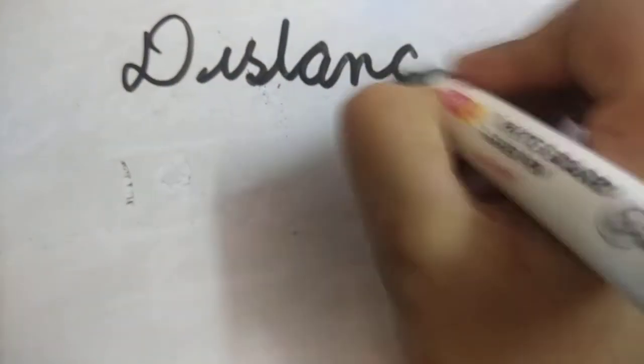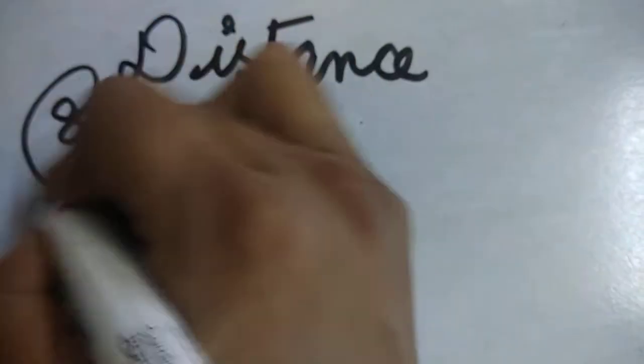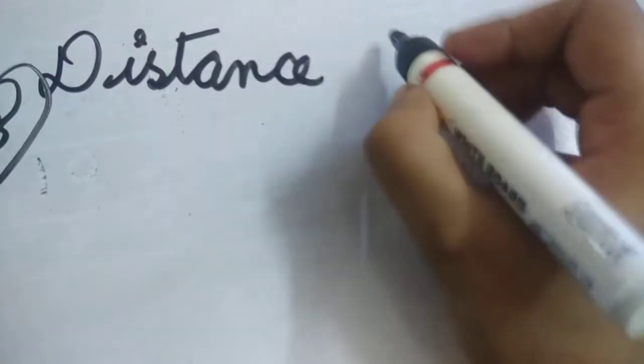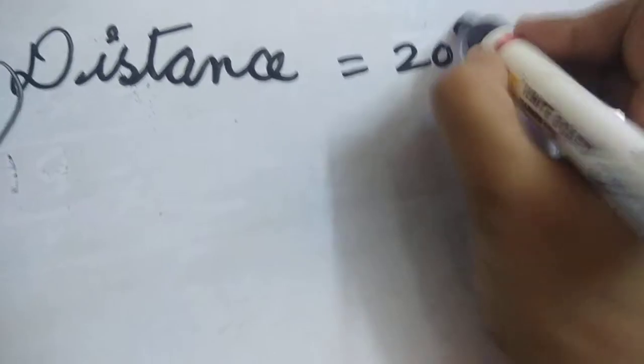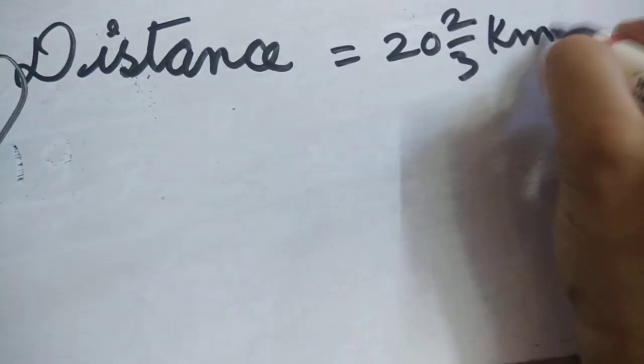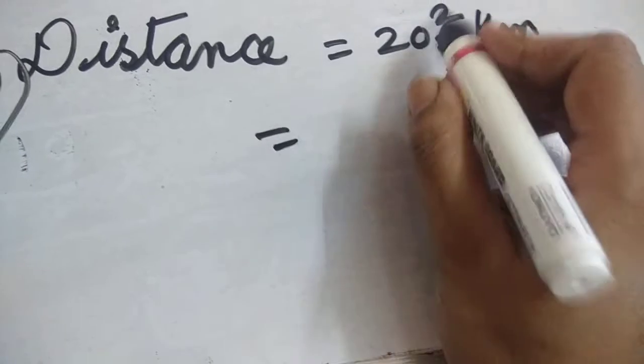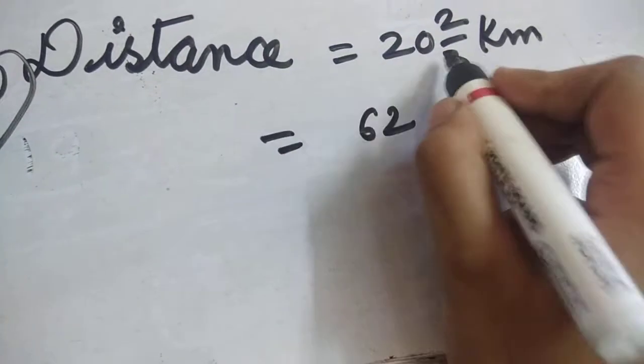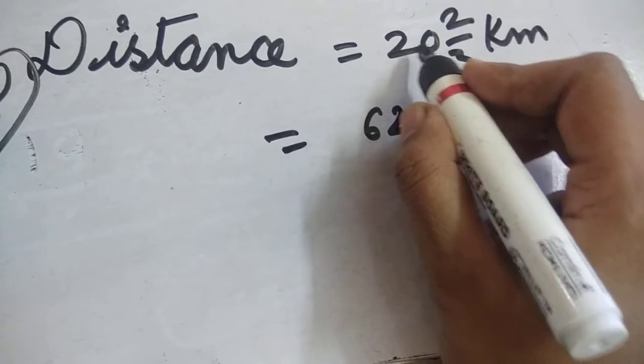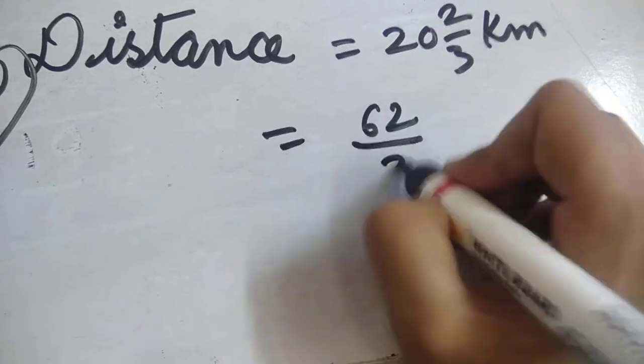Distance equals 22 and 2/3 kilometers. We have to simplify this first. 22 times 3 equals 66, plus 2 equals 68. Wait, let me recalculate: 20 times 3 is 60, 2 times 3 is 6, so 60 plus 6 plus 2 equals 68. No, it's 62/3 kilometers.